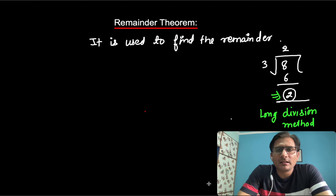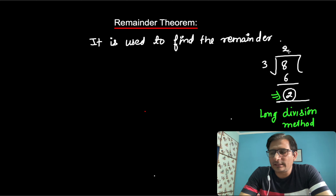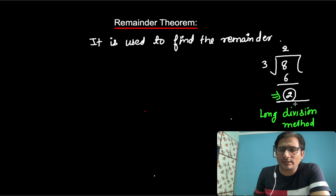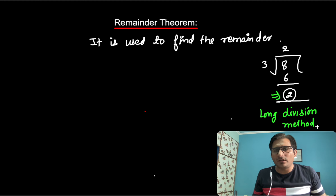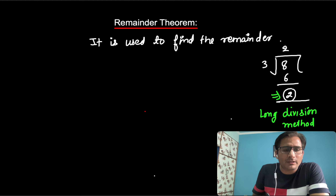This is the Remainder Theorem. The use of the Remainder Theorem is that it is used to find the remainder. For example, if 8 is divided by 3, then 3 goes into 6, and the remainder is 2 — this is found using the long division method. In the Remainder Theorem, we use a different method; the long division method is not used. So it is the replacement of the long division method.